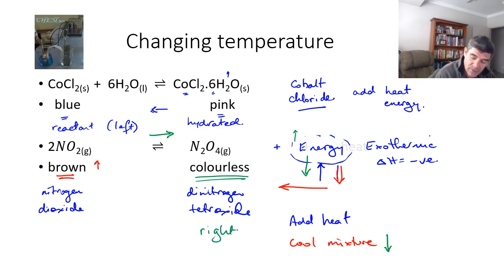And we'll increase the amount of the dinitrogen tetroxide. And of course, that means that the mixture will become paler, less brown, as more of the colourless component is formed.